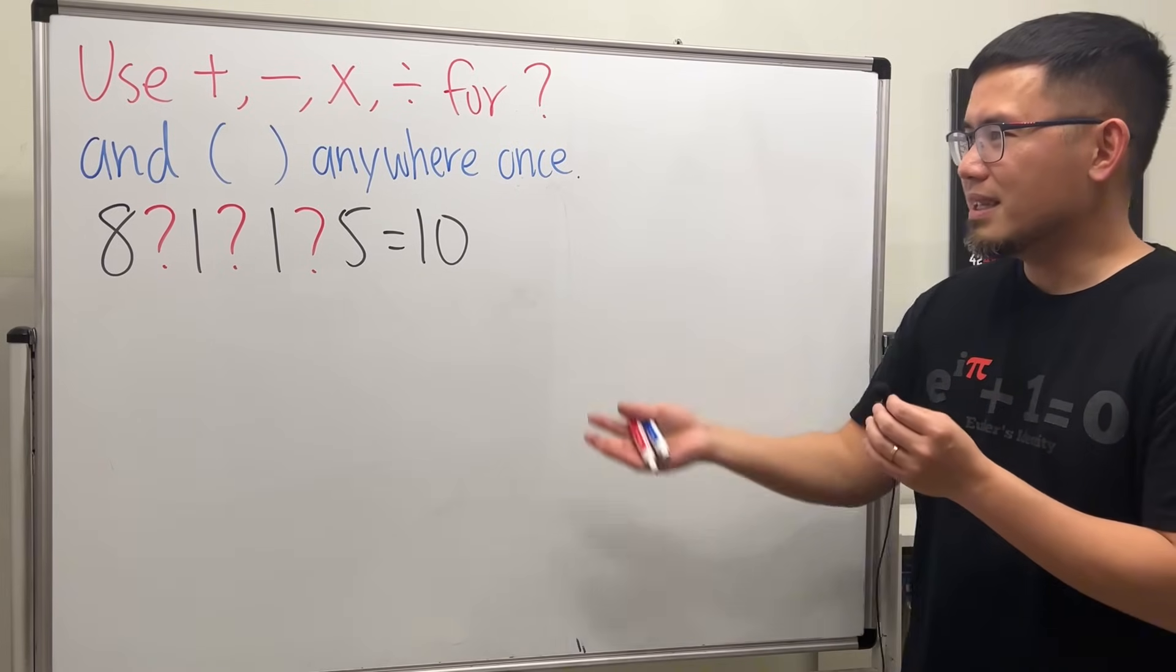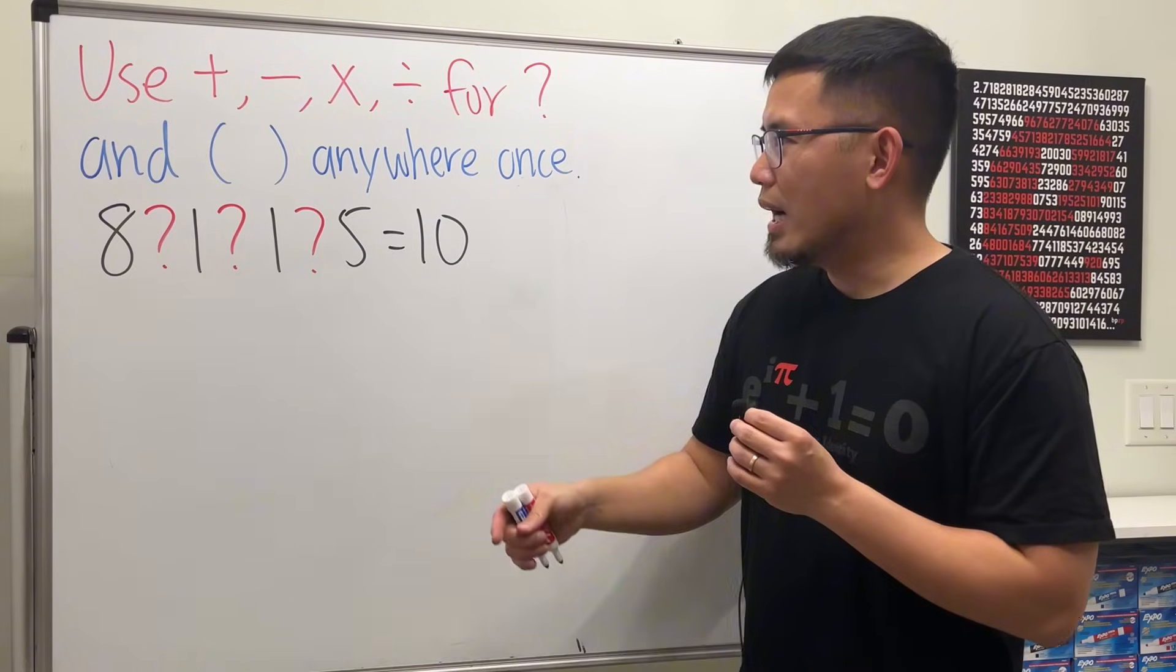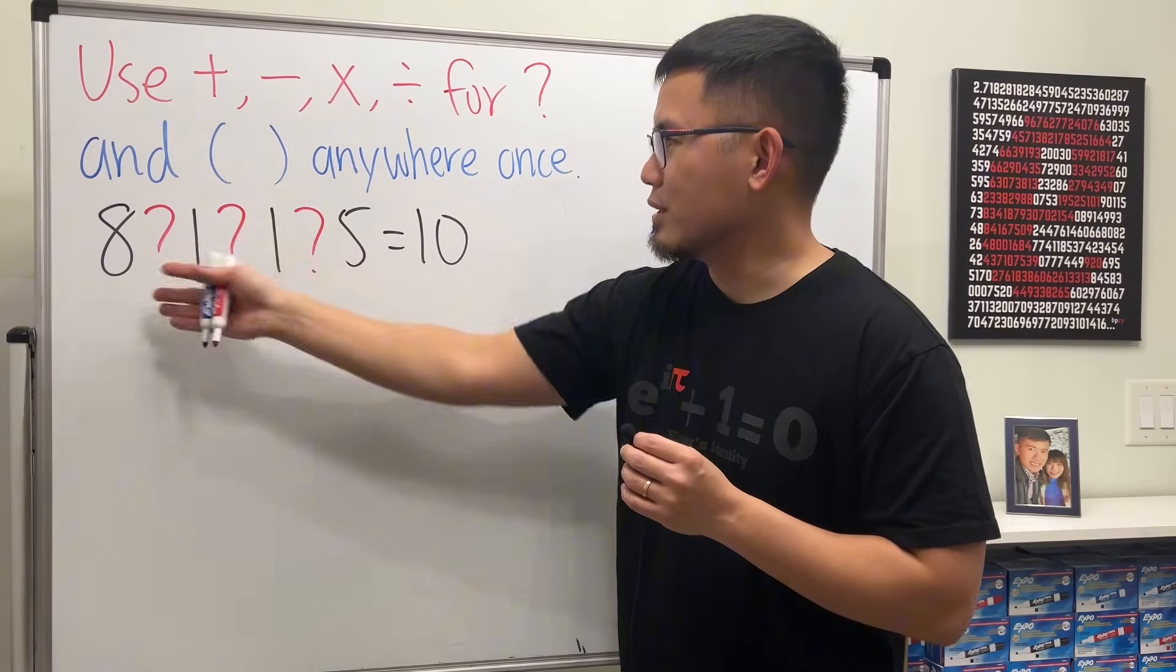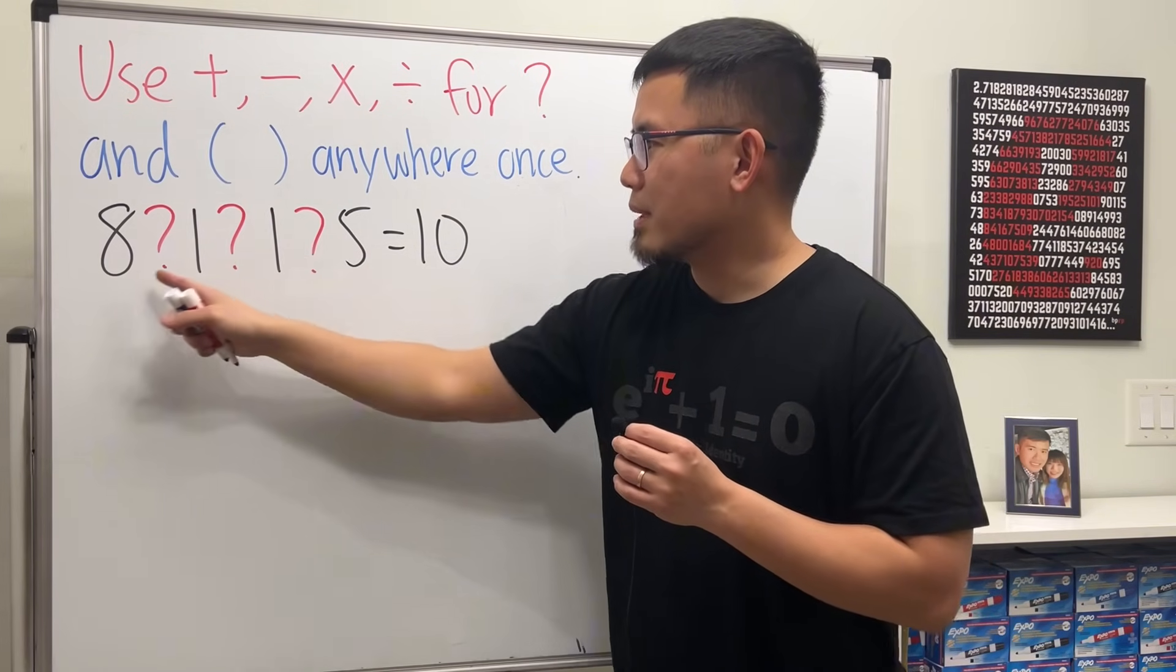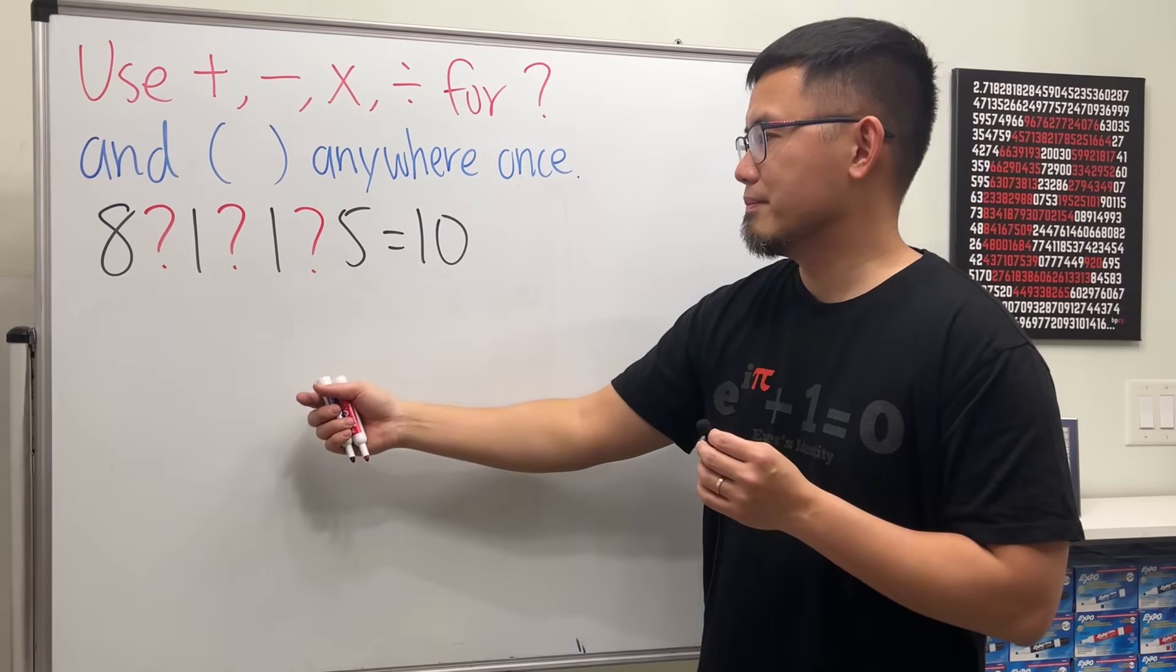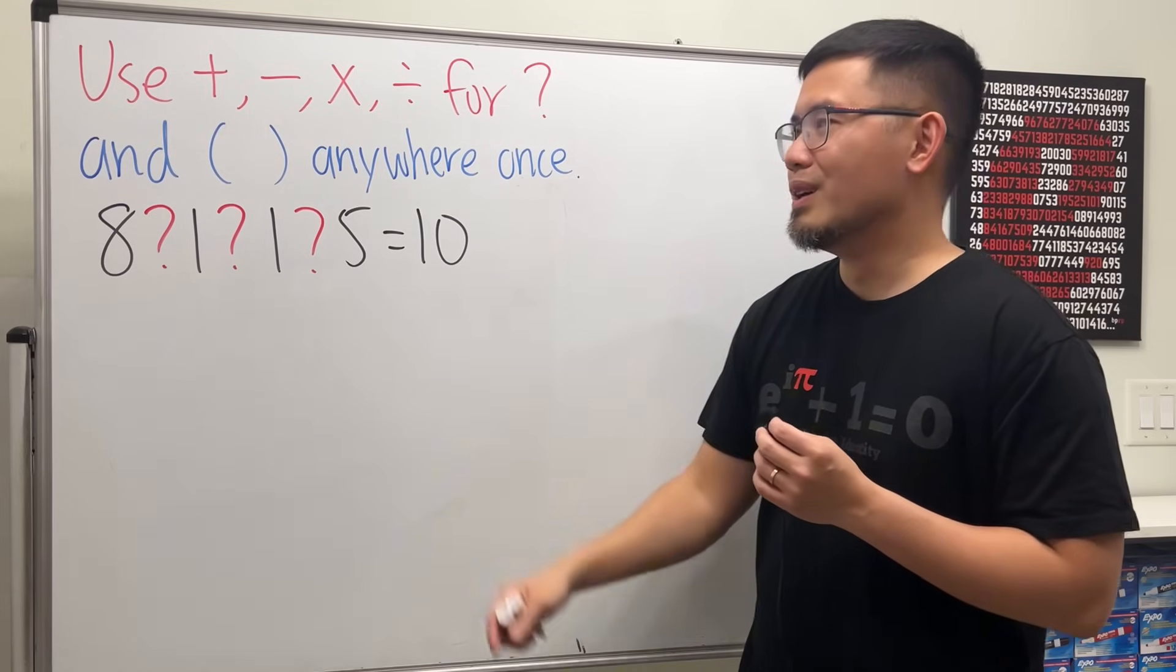Done? Alright, let's just go ahead and give it a try. So I'm just going to say, let's use addition for all. Then 8 plus 1 plus 1, that's 10 already. What do we do? It's a 5, right? So it's no good.